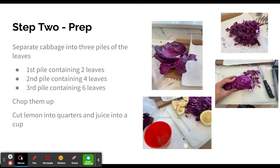Step two is to prep. So first you're going to separate your cabbage into three piles of the peeled off leaves from the cabbage. The first pile is going to contain two leaves, the second pile is going to contain four leaves, and the third pile is going to contain six leaves. You're going to chop them up as shown in this image right here, and then you're going to next prep your lemon by cutting it into quarters and juicing it into a cup.